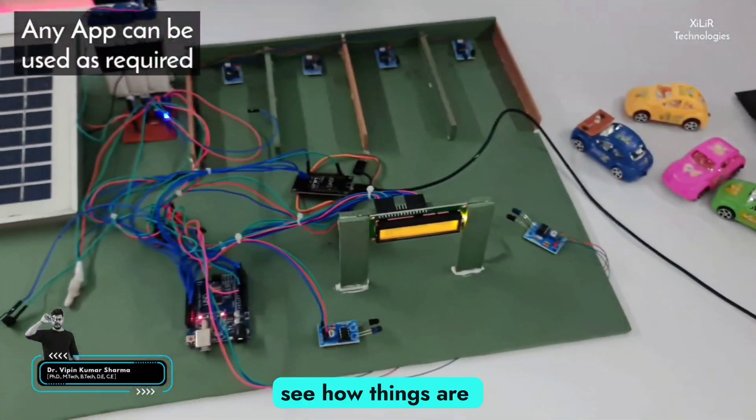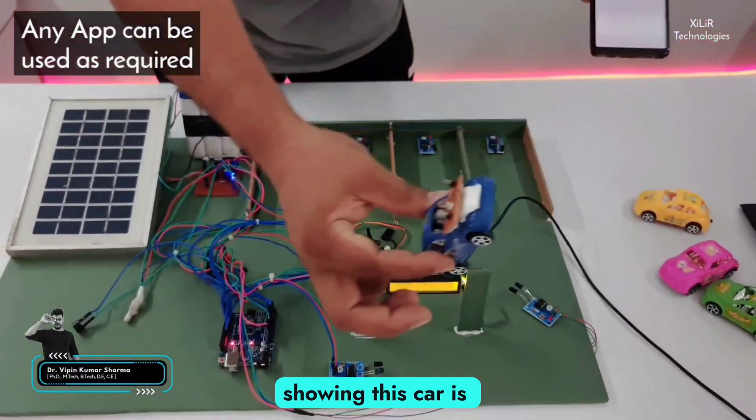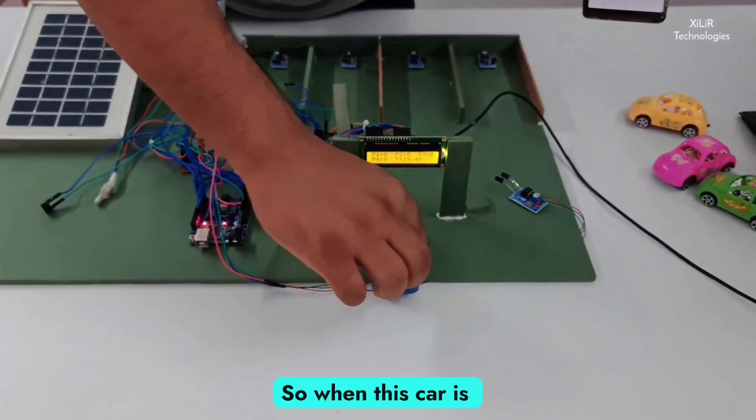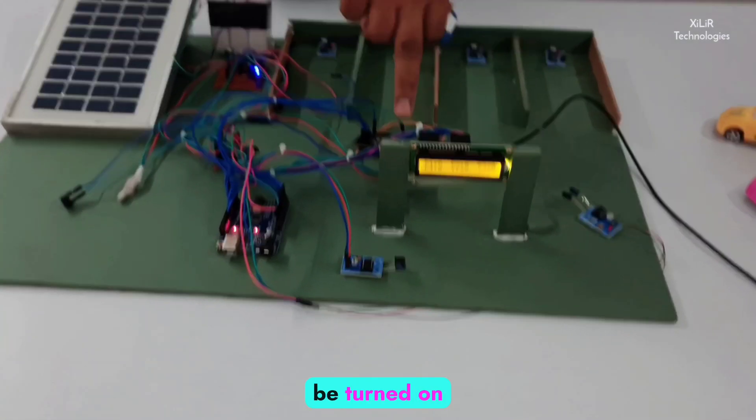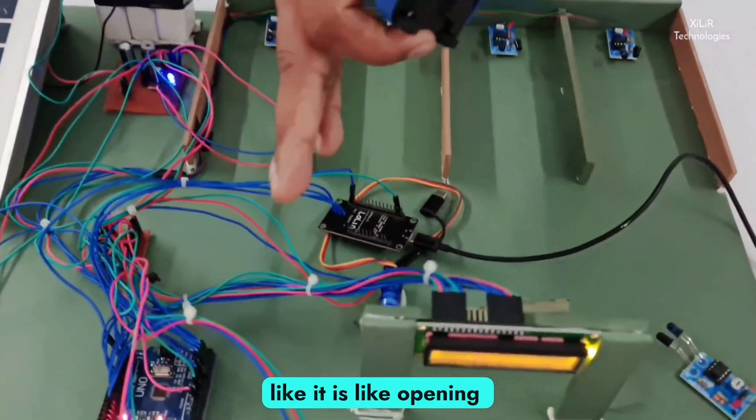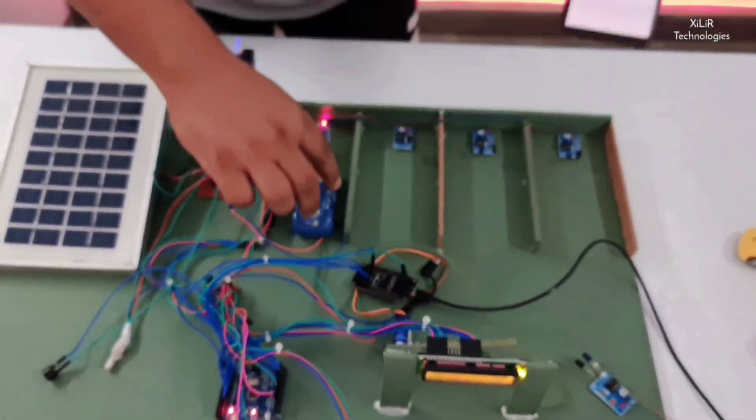So now we have to see how things are working. So first of all I am showing this car is coming. So when this car is coming, this motor will be turned on like it is opening the gate. Then we can pass car here.